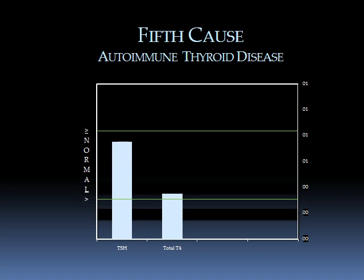The presentation for Hashimoto's can be anything. If you're only testing TSH and total T4, even T3, the way to discover if you have the autoimmune condition is by two blood tests, which I'll cover a little bit later on. Thyroid autoimmune disease is really important to know whether or not you have it if you have low thyroid hormone symptoms.